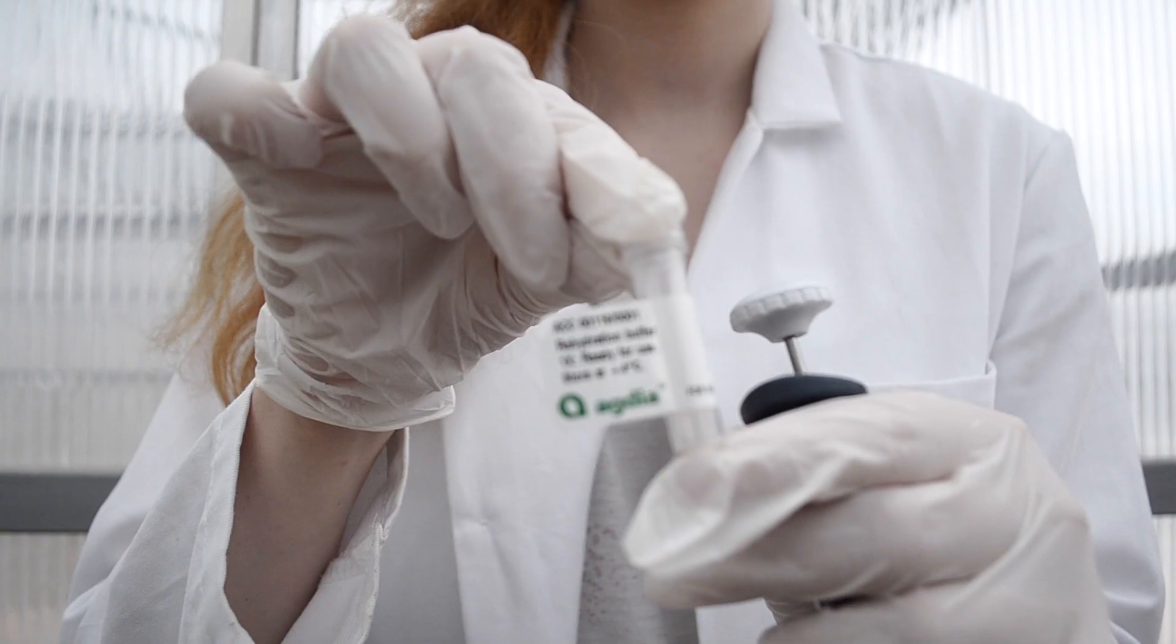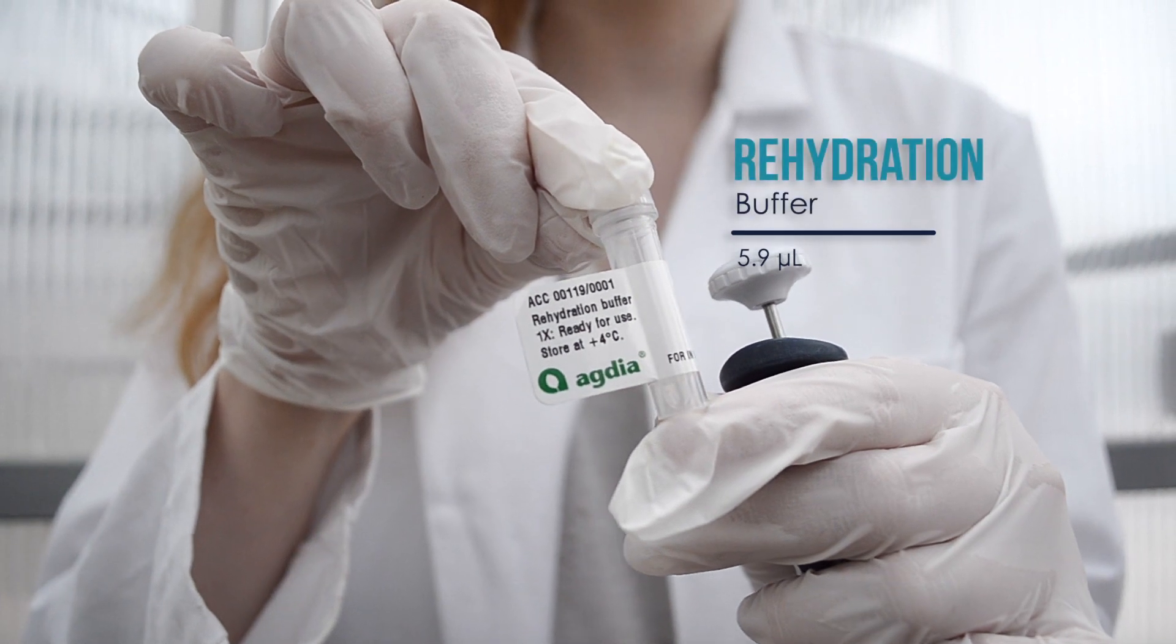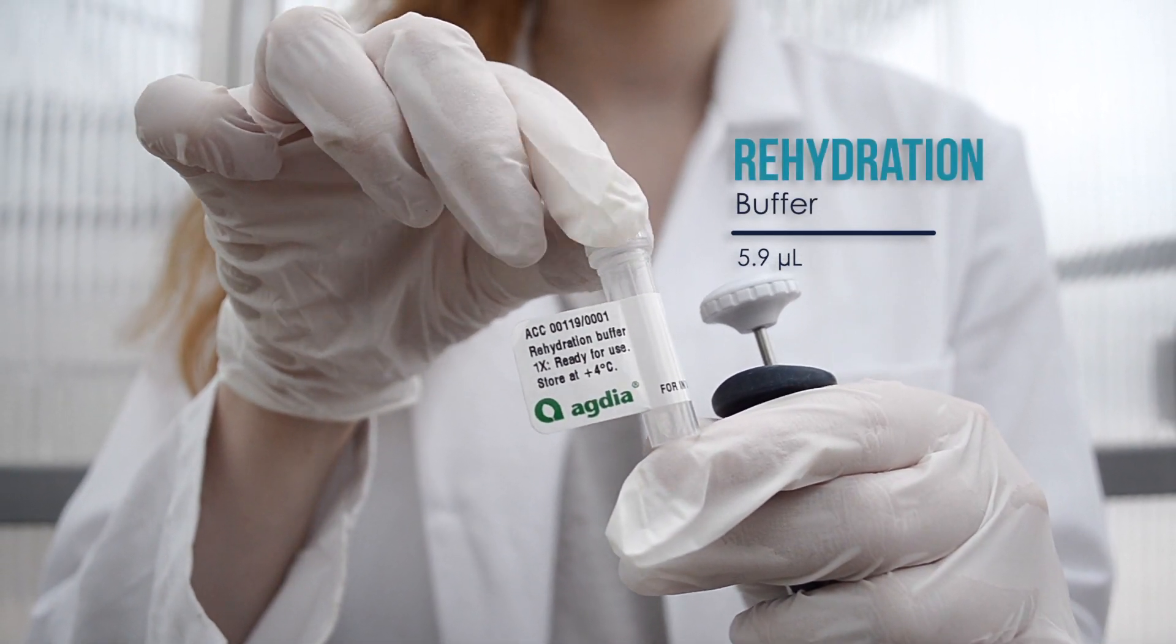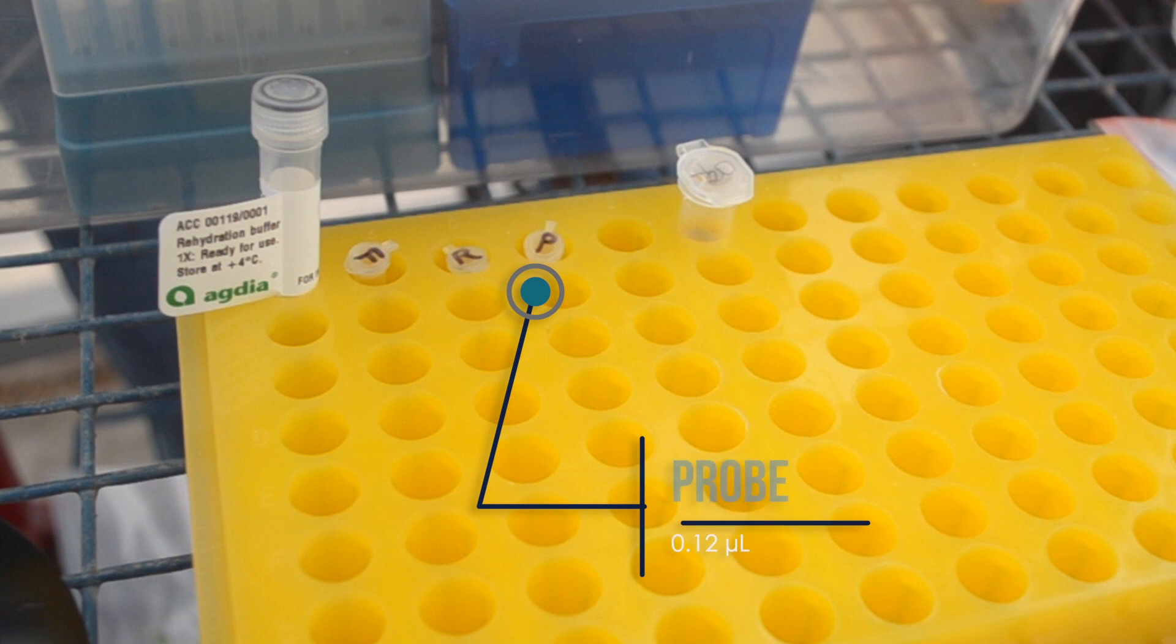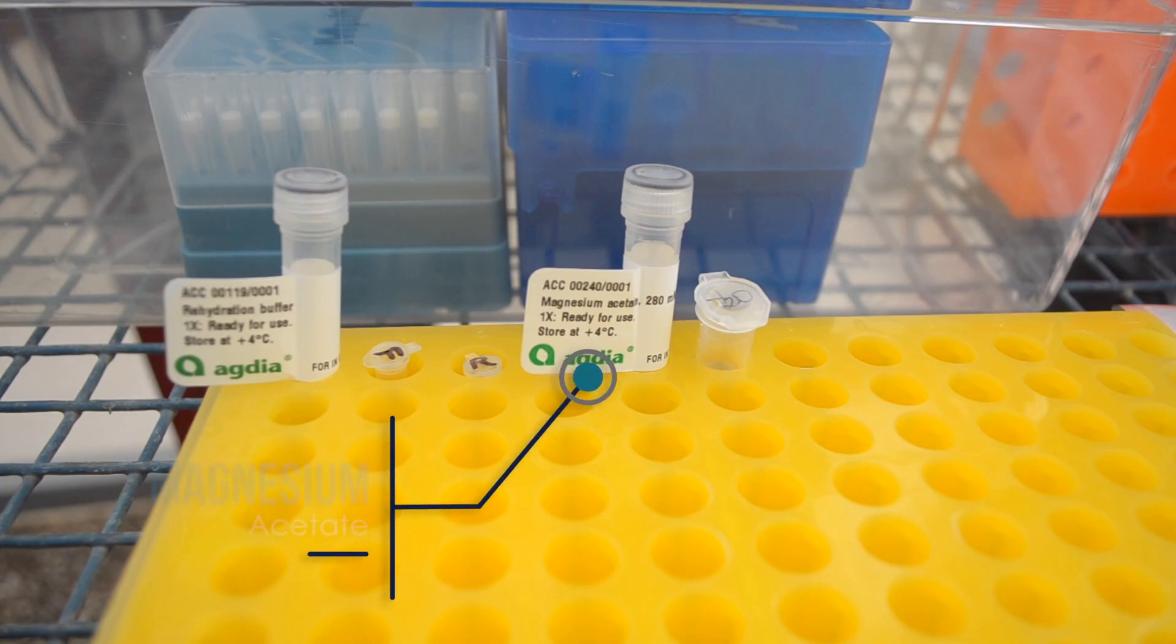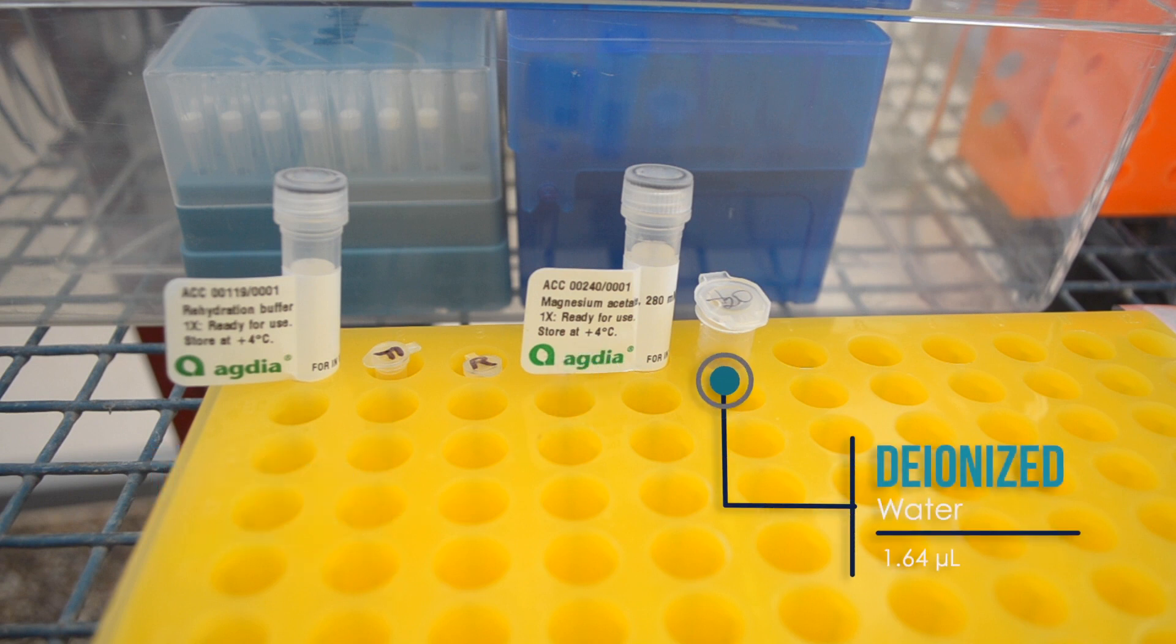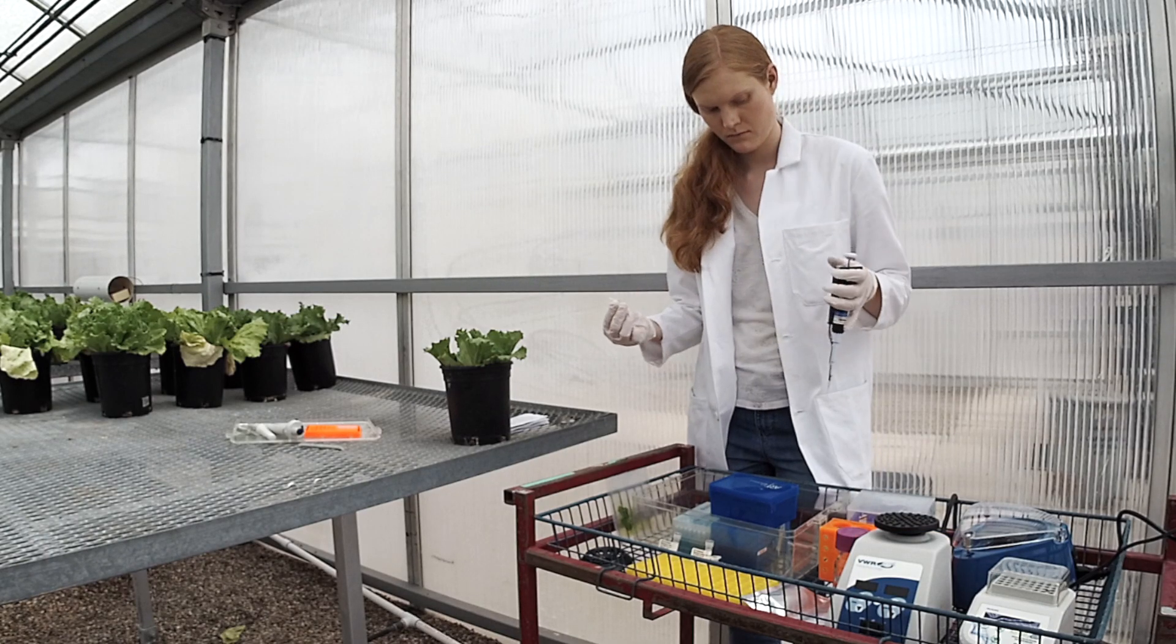We are going to take a PCR tube, fill it with 5.9 microliters of rehydration buffer, 0.42 microliters of each primer, 0.12 microliters of the probe, 0.5 microliters of magnesium acetate, and 1.64 microliters of deionized water for each sample. We call the resulting solution our master mix.